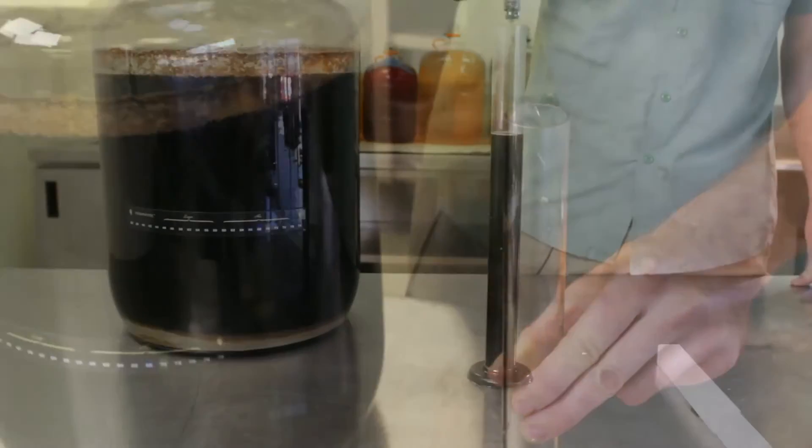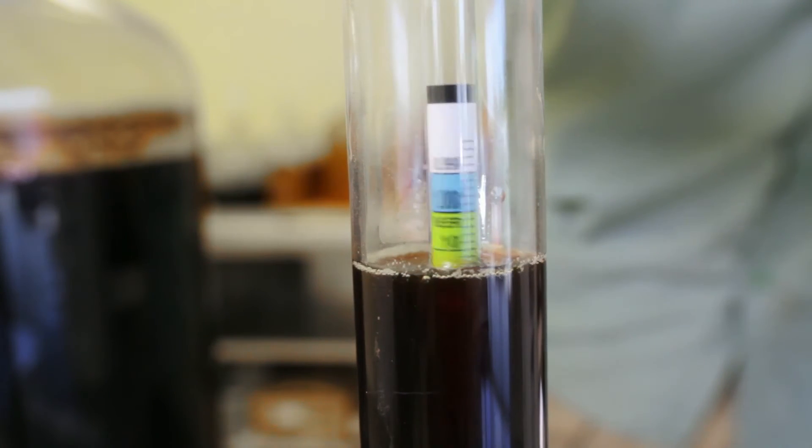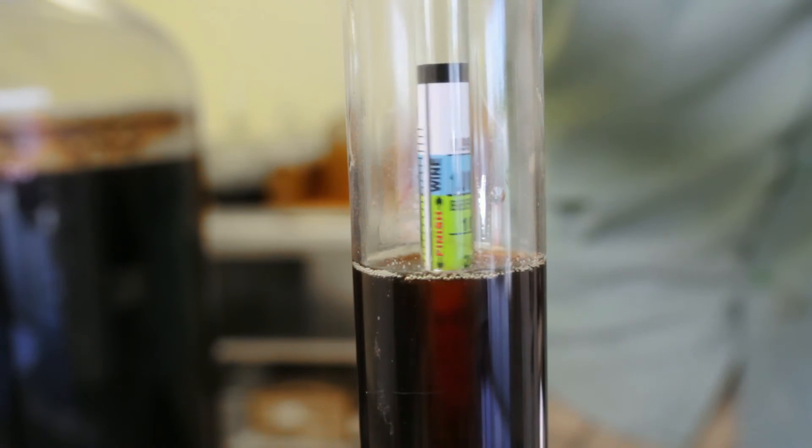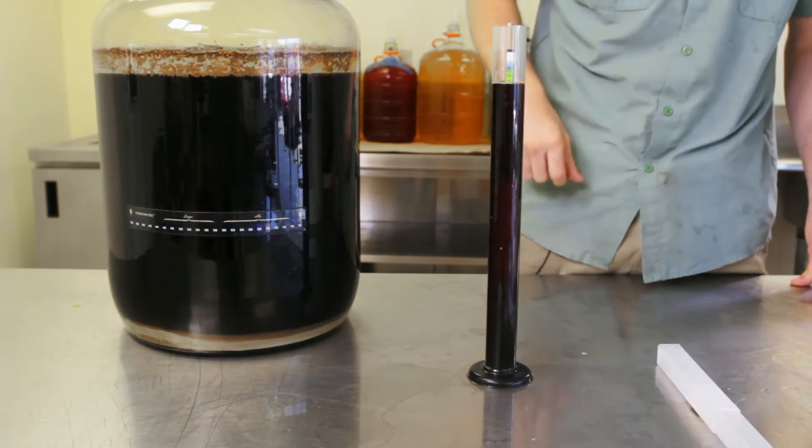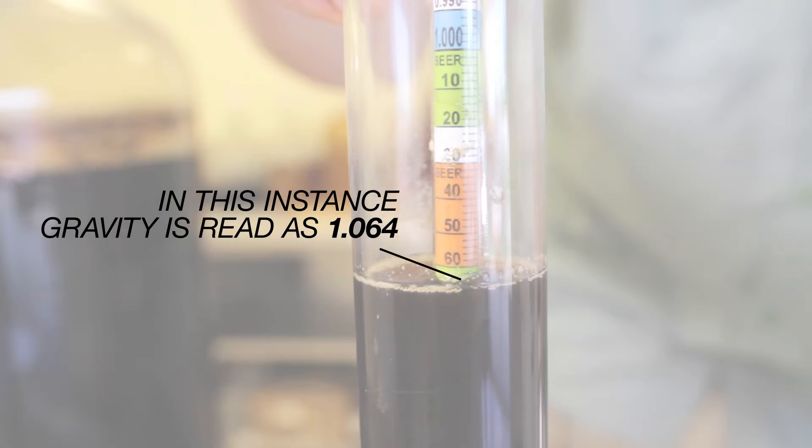Then place your hydrometer into the sample and give it a spin to knock air bubbles off the sides of the hydrometer. You can read the hydrometer at the liquid line on the specific gravity scale. The numbers on this scale are meant to be read with a 1.0 in front of the displayed number.